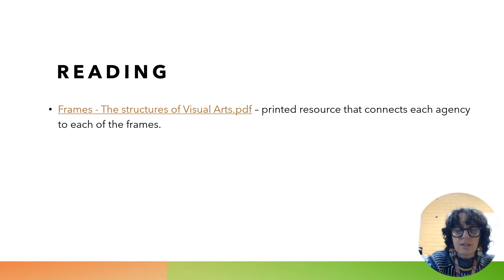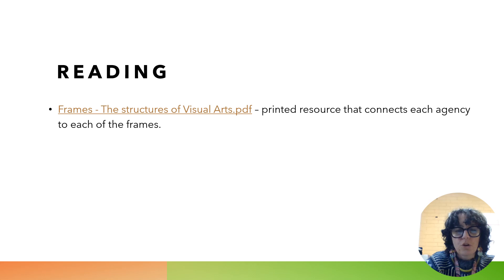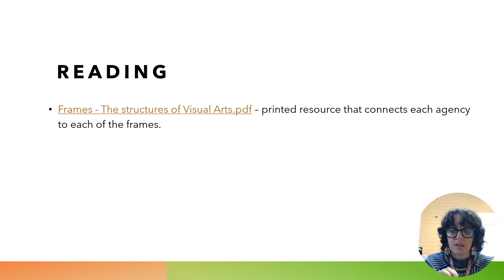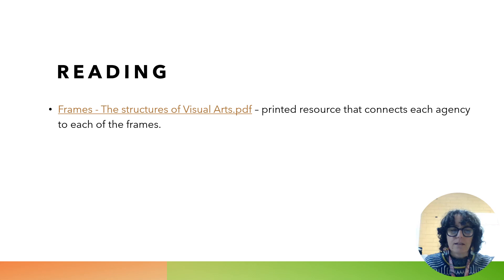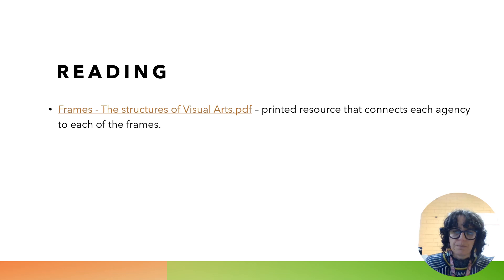There's a document available for further reading that you can download from underneath this video, or access via Connect, OneNote, or get a printed copy. This document gives more information and connects the conceptual framework and its four agencies — artwork, artist, audience and world — to the four frames which we will be looking at in a later lesson. Once you've got your head around each of those different frameworks and frames, and understand that they all operate intermeshed rather than side by side, it becomes a really straightforward way to look at different artworks: considering the artist, the world, the audience and the artwork, and thinking about subjective, cultural, structural and postmodern responses.